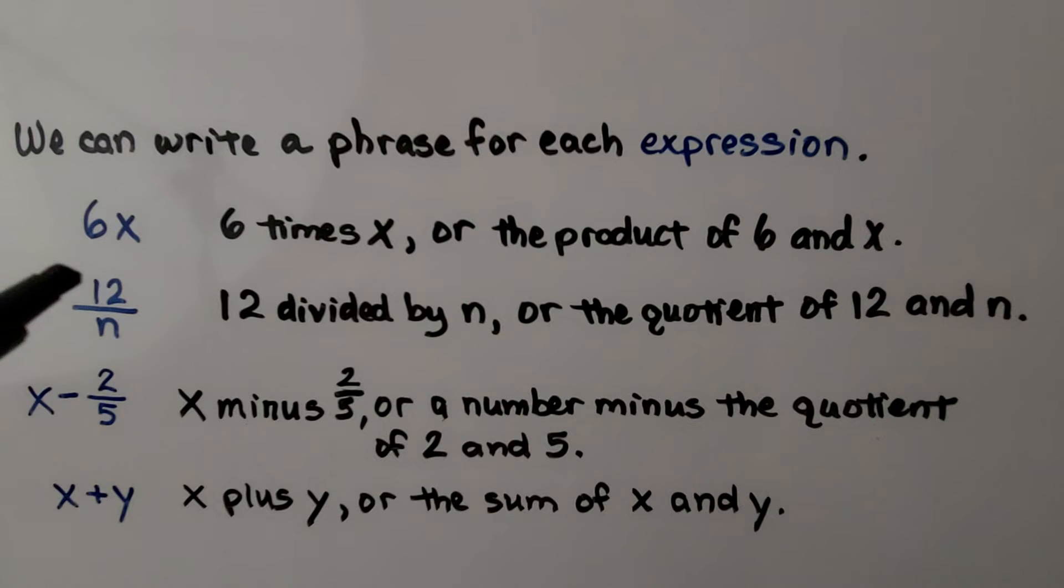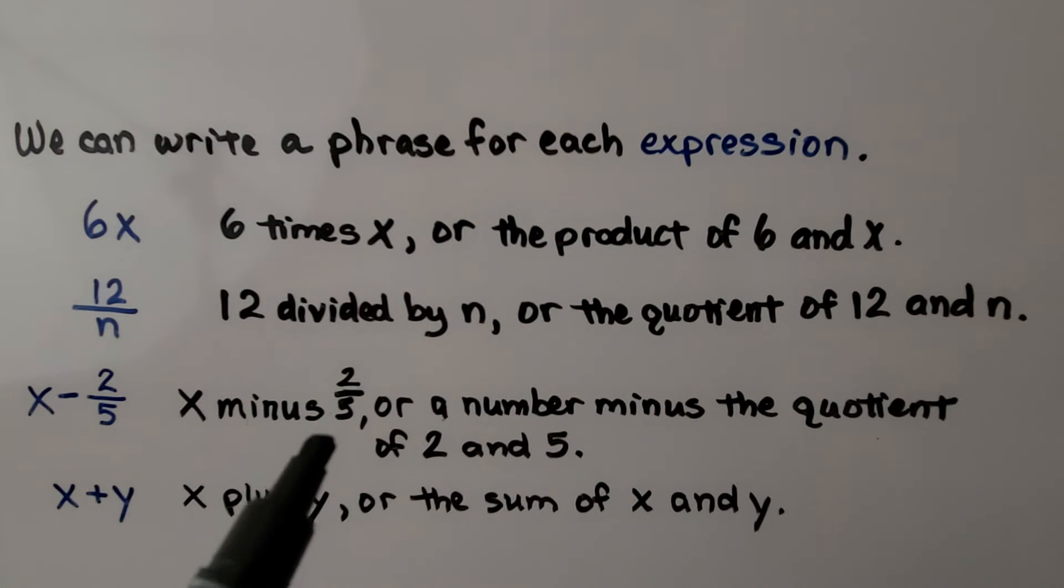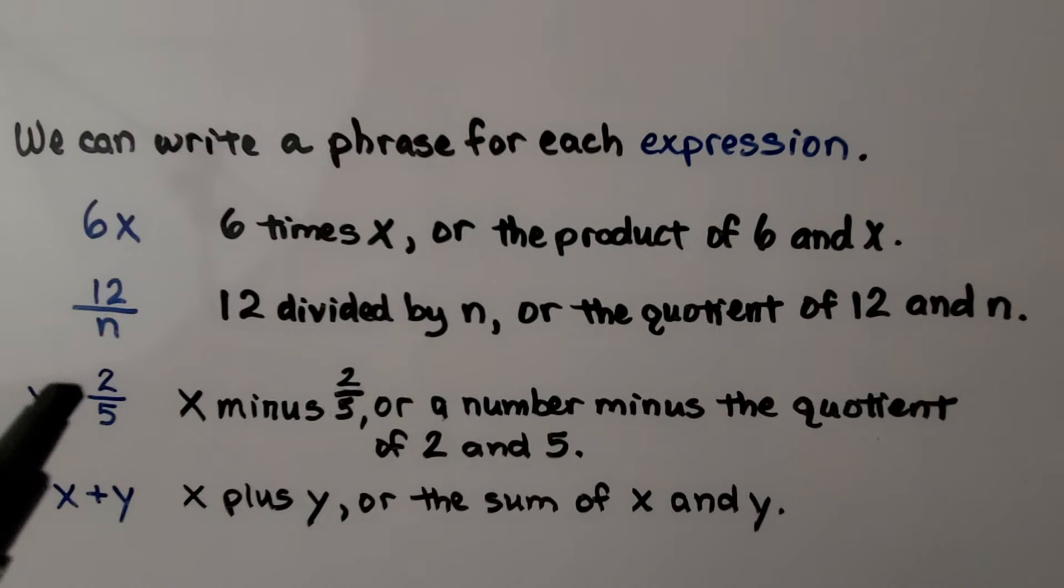If we saw 12 over n, it means 12 divided by n, or the quotient of 12 and n. If we saw x minus 2 fifths, it could mean x minus 2 fifths, or it could mean a number minus the quotient of 2 and 5.